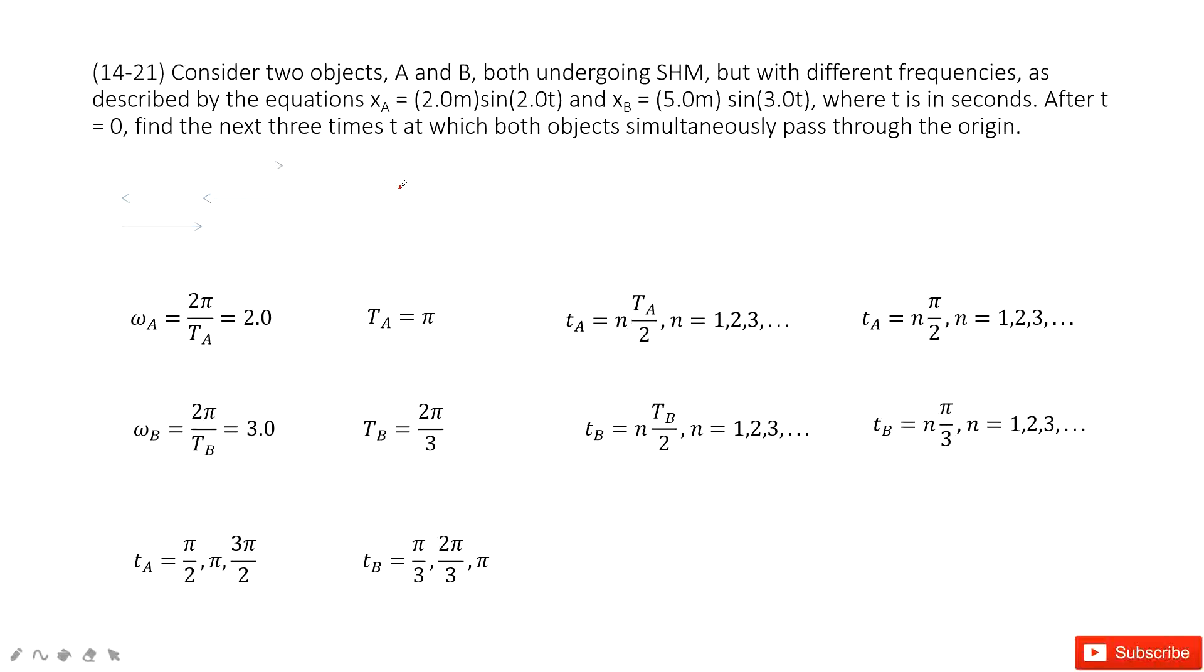Chapter 14 is about oscillations. We have two objects, A and B, both undergoing simple harmonic motion with given functions x_A and x_B. We need to find the first three times at which both objects simultaneously pass through the origin.